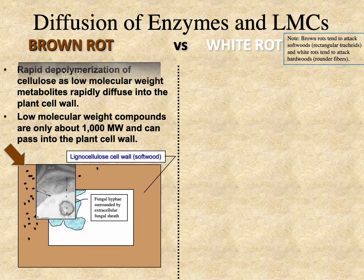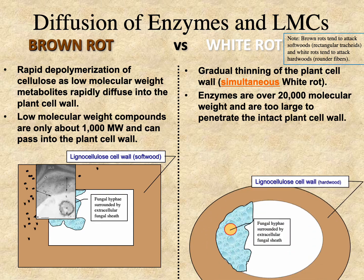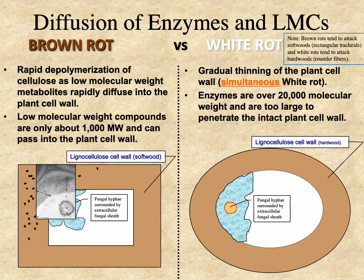The next aspect is white rots, shown on the right side. We don't think of enzymes as penetrating the wall, but rather acting at the surface of the cell wall where they slowly erode it. This cell wall is depicted as oval or rounded because white rots tend in general to prefer hardwoods. The fungus has the extracellular matrix surrounding it, gluing it to the cell wall, but also functioning as a medium through which the enzymes diffuse to reach the cell wall.